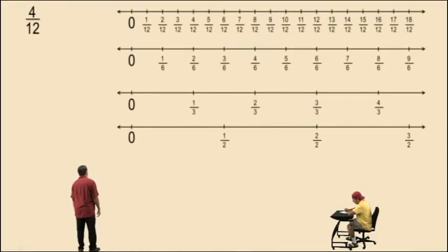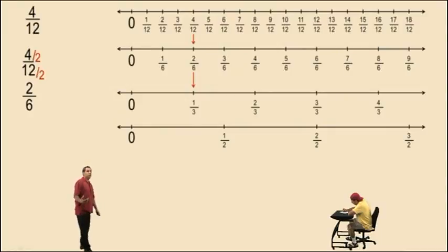4 twelfths. Well, 4 twelfths is equivalent to 2 sixths, which is equivalent to 1 third. Well, since 4 and 12 are even numbers, let's divide by 2 and we get 2 sixths. Now, 2 and 6 have a common factor of 2, so let's divide by 2 again and we get 1 third.